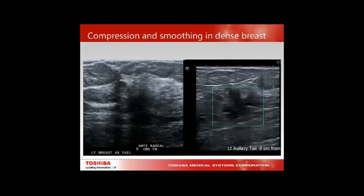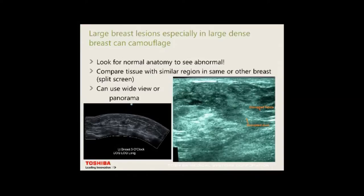This patient was an identical twin of a triplet whose twin had breast cancer. She had been refused biopsy nine months before because the sonographer couldn't see anything — she had dense breast tissue and a pure white-out mammogram. Unable to identify the tissue, unable to see through a region, I changed machines and used Precision and ApliPure with compression, revealing a spiculating lesion and ultimately a large breast cancer. Large breast lesions, especially in dense breasts, can camouflage — look for normal anatomy to see the abnormal.